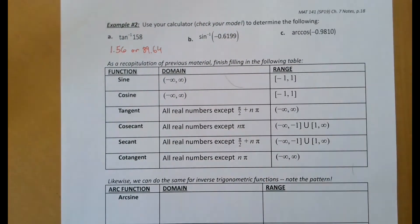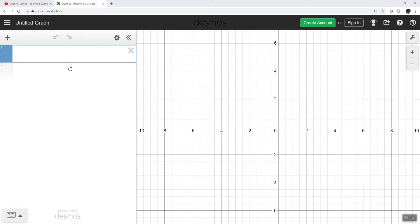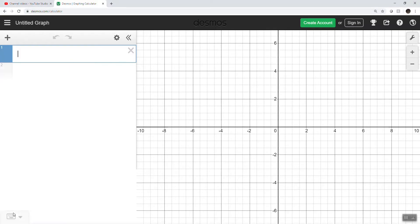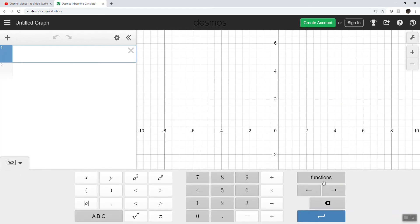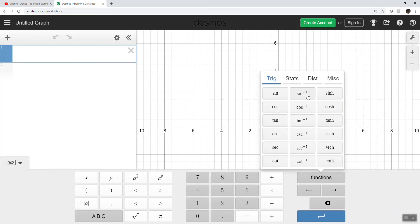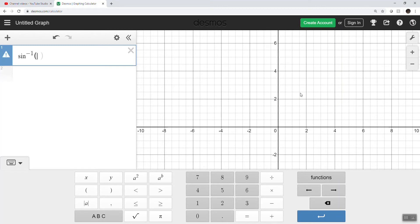I'm going to show you the same method with Desmos. So we're doing sine inverse of negative 0.6199. Let me switch to Desmos. In the little keyboard thing here under functions, here's all of the inverse functions. And what's kind of nice about Desmos is it has arc cosecant, secant, and cotangent, unlike the calculator.